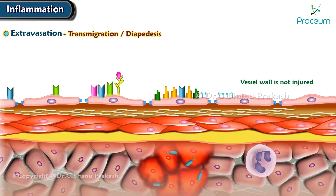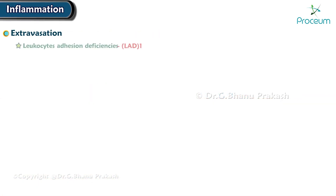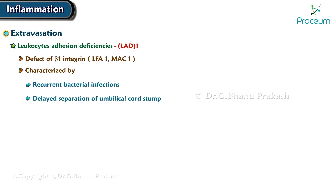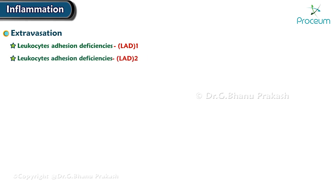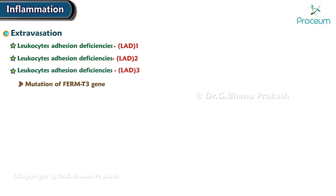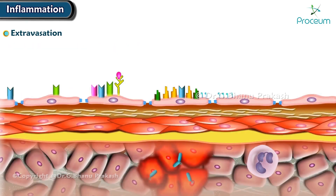Next, we have to address adhesion deficiencies in leukocytes. Leukocyte adhesion disorder, or LAD-1, occurs in beta-2 integrins, including LFA-1 and MAC-1, and is characterized by recurrent bacterial infections and delayed separation of the umbilical cord stump. LAD-2 occurs in the selectin ligand sialyl-Lewis X and is caused by a defect in fucosyltransferase. LAD-3 is due to a mutation of the FERMT3 gene resulting in impaired integrin activation.